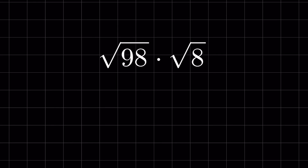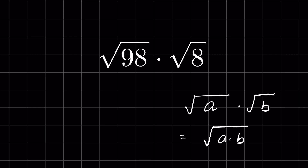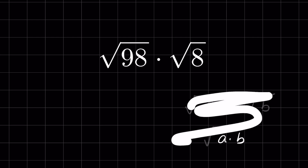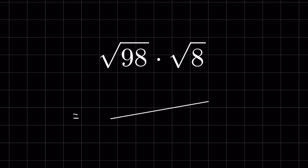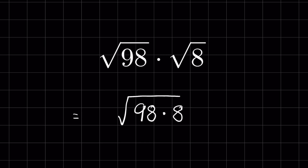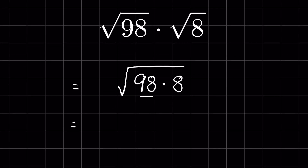Square root of 98 times square root of 8. When multiplying radicals, when a under square root is multiplied by b under square root, we can write it as a times b under square root. So this we can also write as square root of 98 times 8.